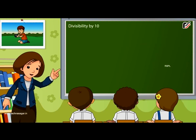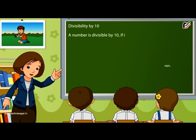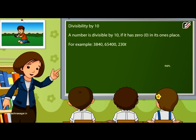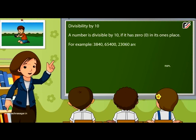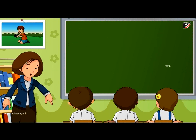Divisibility by 10: A number is divisible by 10 if it has 0 in its ones place. For example, 3840, 60, and 5423060 are divisible by 10.